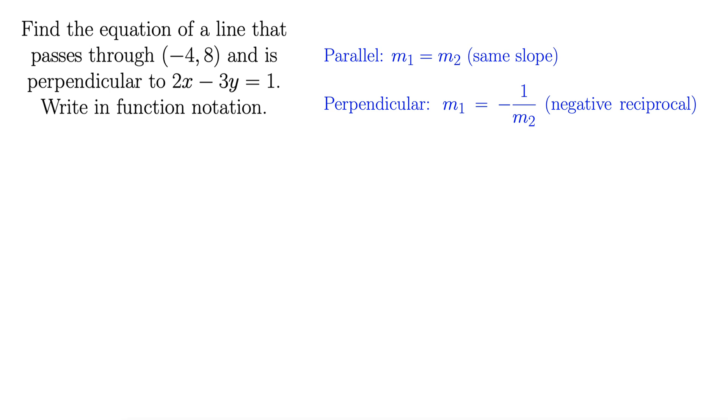So let's take a look at this one. We want a perpendicular line to the one going through 2x minus 3y equals 1. So we have to find the slope of this thing.